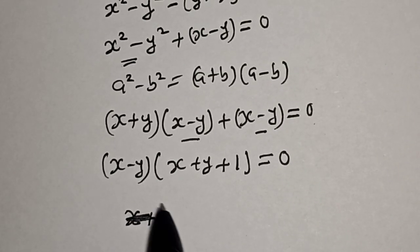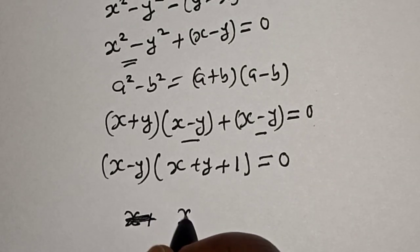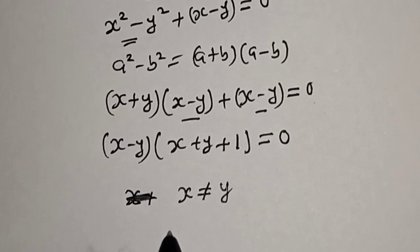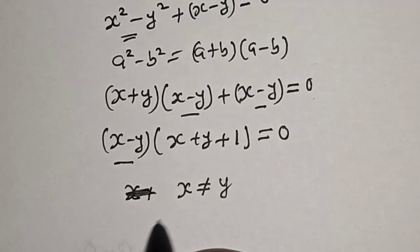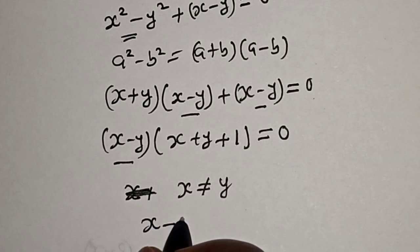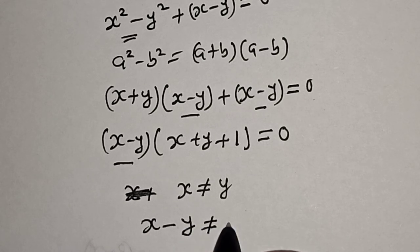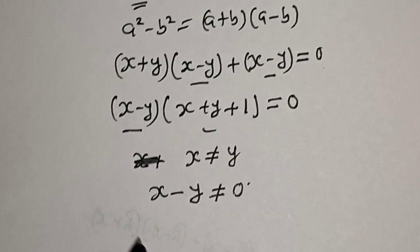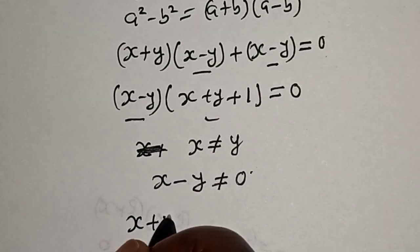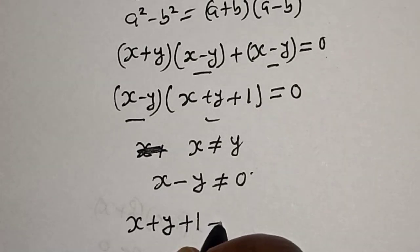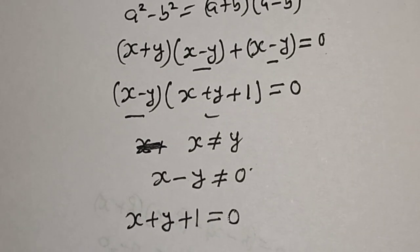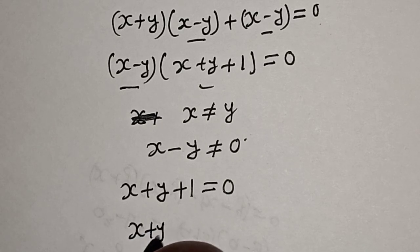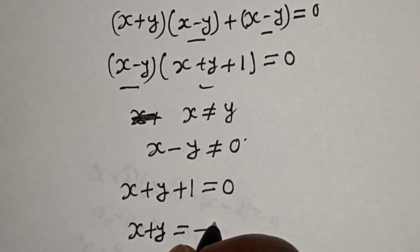Now there are two cases here, but remember that s is not equal to y. Therefore, s minus y cannot be equal to 0. So we consider the second factor: s plus y plus 1 is equal to 0, which gives us s plus y is equal to minus 1.